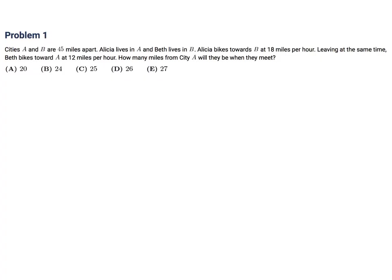Cities A and B are 45 miles apart. Alicia lives in A, Beth in B. Alicia bikes towards B at 18 miles per hour. Leaving at the same time, Beth bikes towards A at 12 miles per hour. How many miles from city A will they be when they meet?